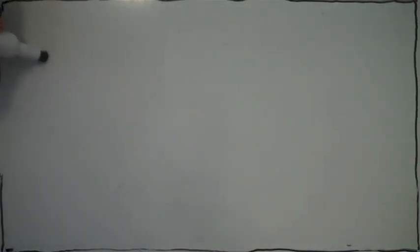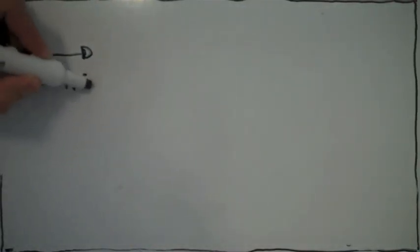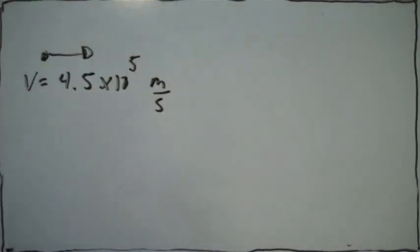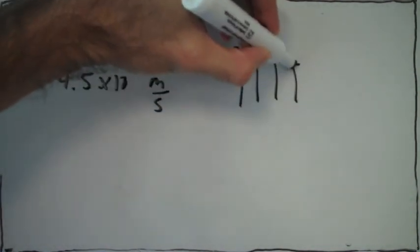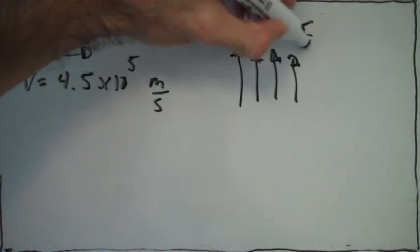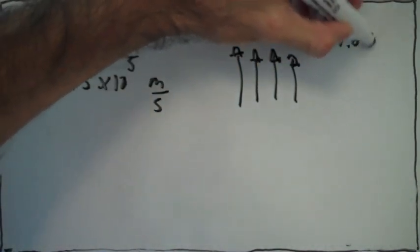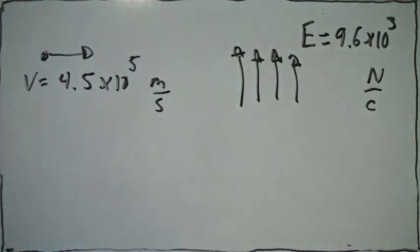In this problem, we are told that there's a proton moving horizontally with a velocity of 4.5 times 10 to the 5 meters per second, and the proton moves into a region with a vertical electric field, and the magnitude of the electric field is given by 9.6 times 10 to the 3.